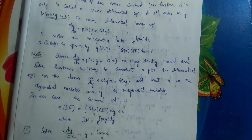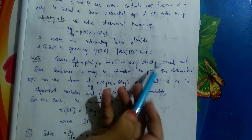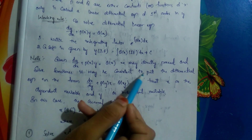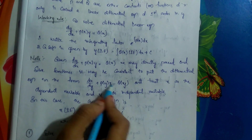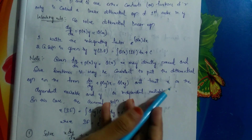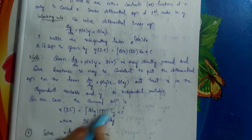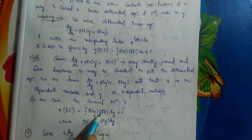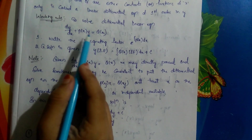Note: given dy/dx plus P(x)·y equals Q(x), we may directly proceed and solve. Sometimes it is convenient to put the equation in the form dx/dy plus P(y)·x equals Q(y), treating x as the dependent variable and y as the independent variable. In this case, the general solution is x times the integrating factor equals ∫Q(y) times integrating factor dy plus c, and the integrating factor is e to the power of ∫P(y) dy.